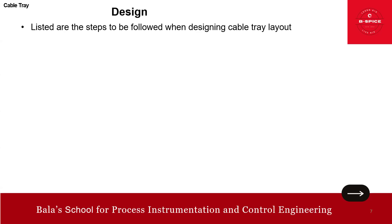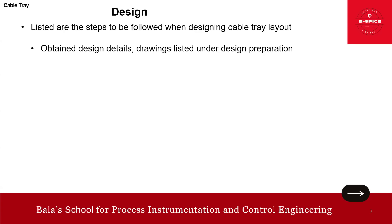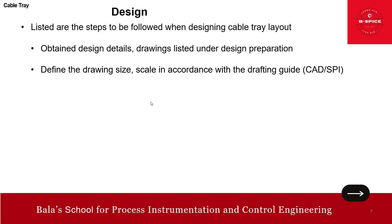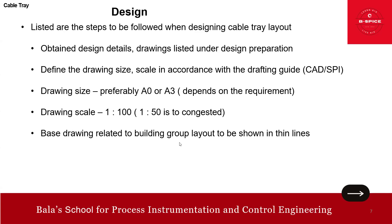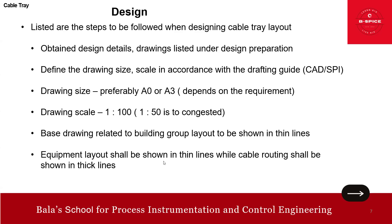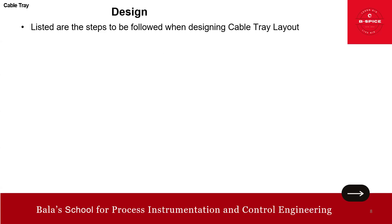For the design steps: obtain all design drawings, then determine drawing size - preferably A0 or A3 at a scale of 1:100, or 1:50 if needed. The base building group layout from civil drawings should be shown in thin lines. Equipment layout should also be shown in thin lines, while cable routing shall be shown in thick lines. This is because the cable tray is the subject of this drawing and should be predominantly visible.